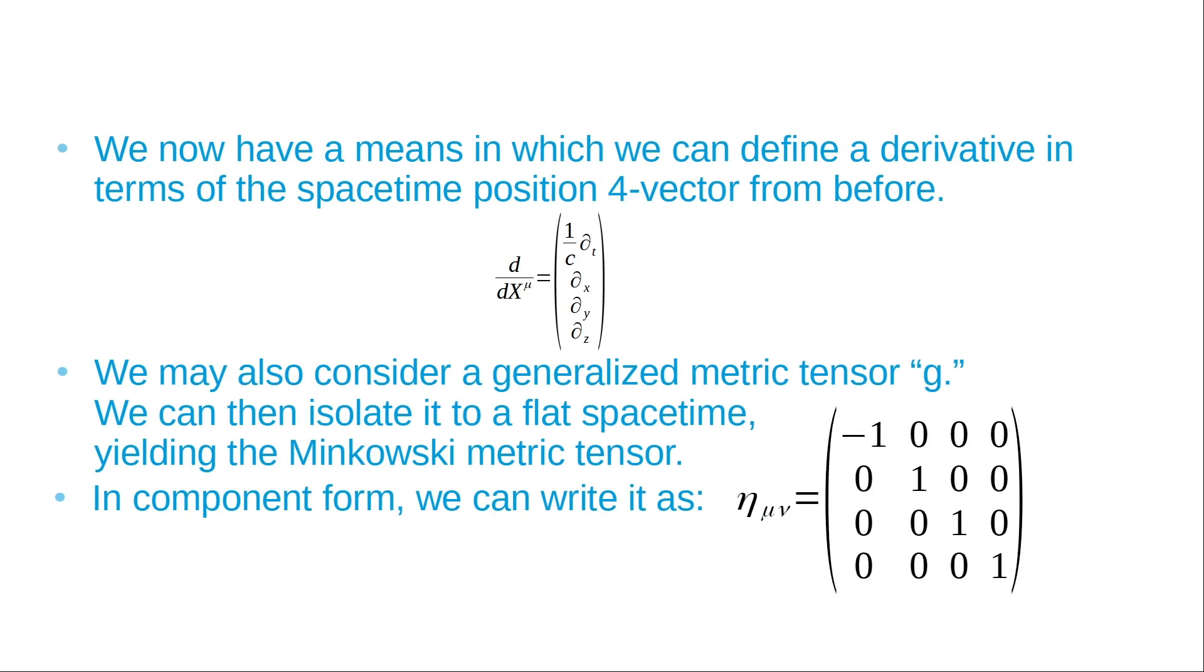What we see here, eta mu nu, is nearly identical to the identity matrix. That's interesting because in flat spacetime you'd expect the Pythagorean theorem to result in its full form. But we have this negative one, which has to do with time and the speed of light, making sure our spacetime units are correct for relativistic measurements. These are not Newtonian measurements.